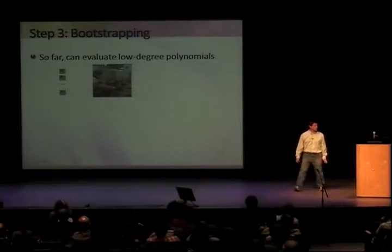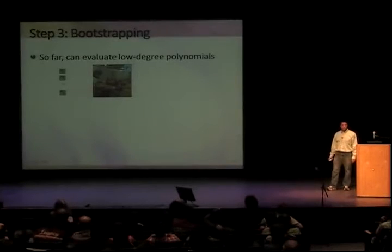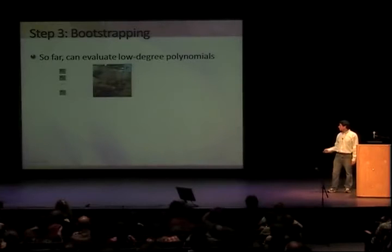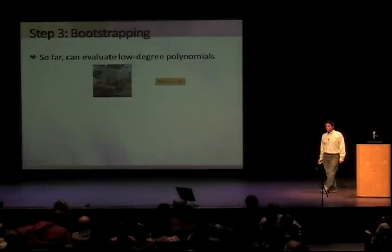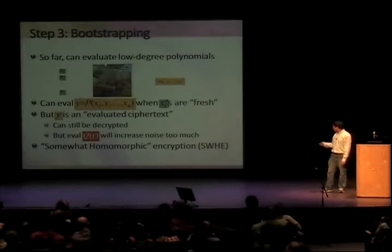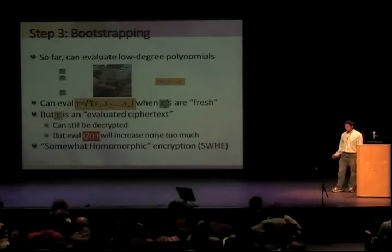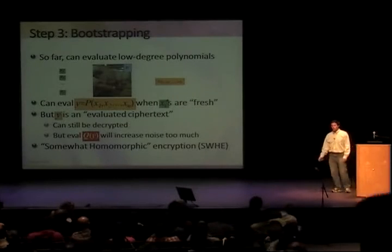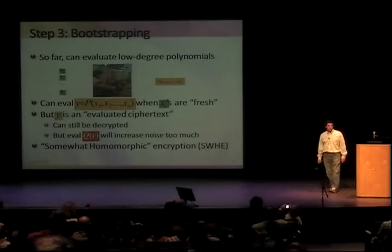We've done steps one and two, and can now evaluate low-degree polynomials. Fresh ciphertexts start with very little noise — call them green. After evaluation, the noise grows and we get orange ciphertexts that still decrypt correctly, but if you try to evaluate further they turn red — too much noise, decryption fails. An encryption scheme with this property is called a somewhat homomorphic encryption scheme. We'll use bootstrapping to handle higher degrees.